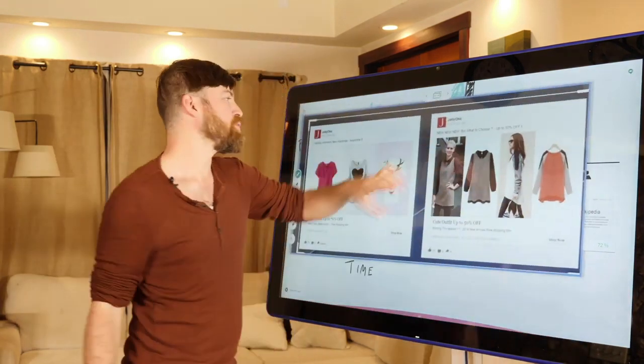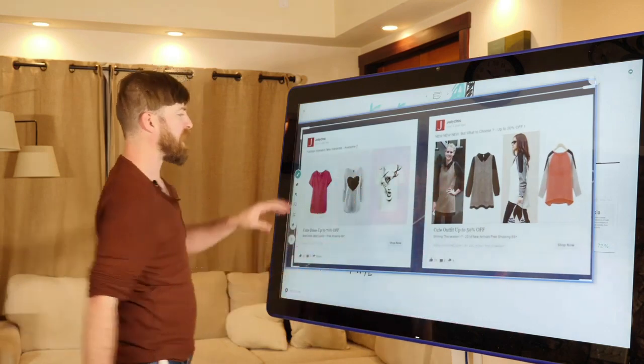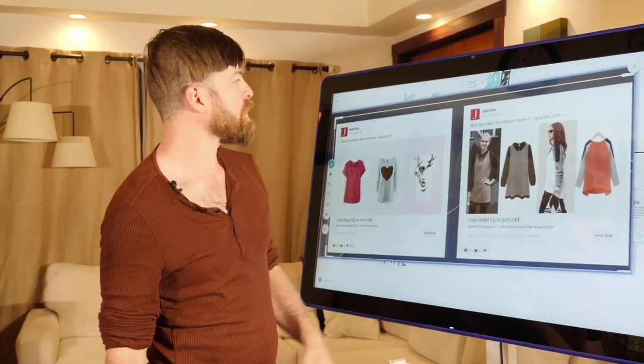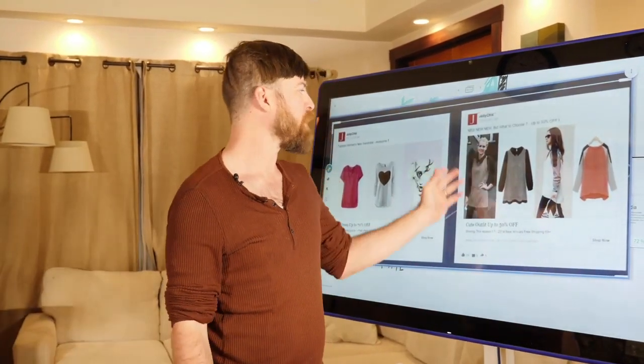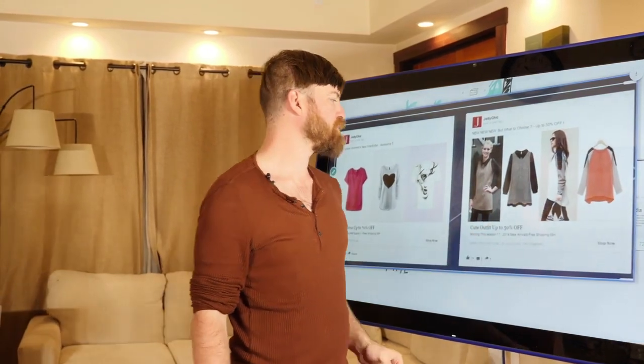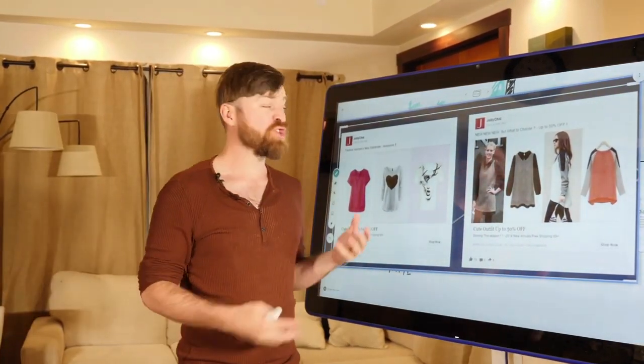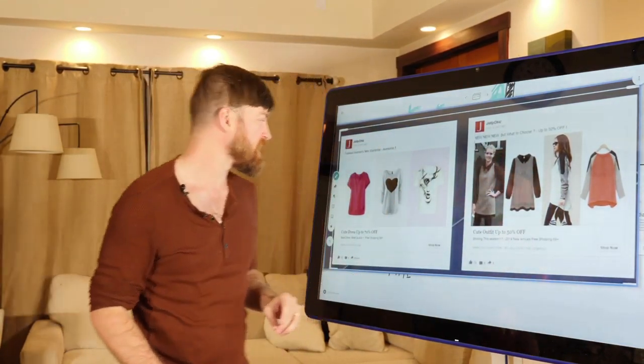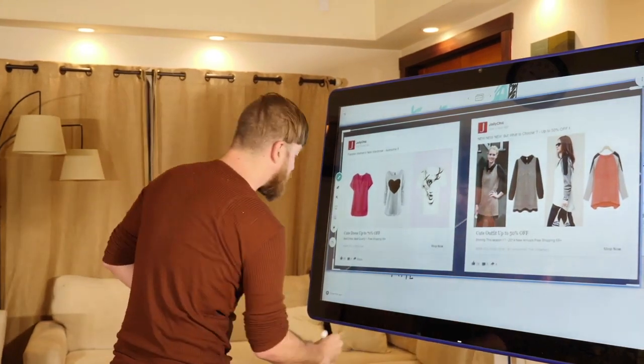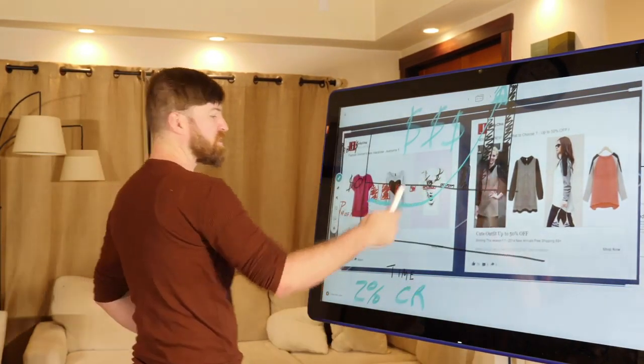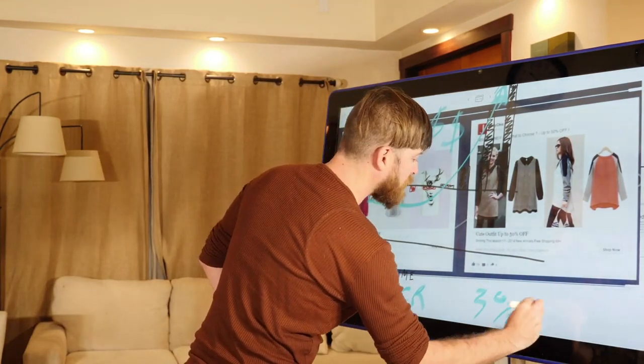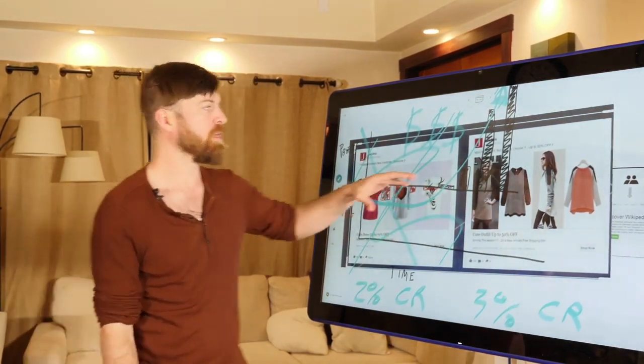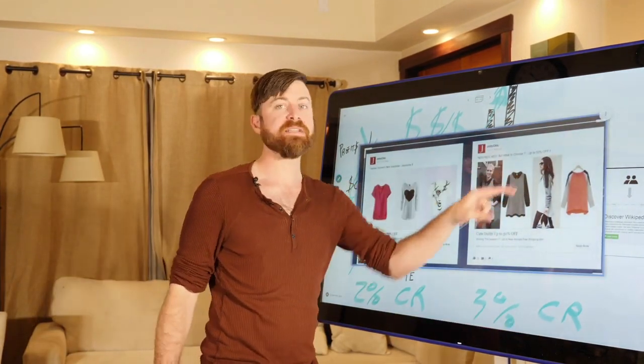Now here's an example of two ads that were on Facebook. So one ad has pictures of dresses without people wearing them and it says cute dress up to 70% off. Here's another ad that actually has individuals wearing their dresses and it says cute outfit up to 50% off. Now a normal company would just run these ads and just say, oh, here are two good ads. But a smart marketer who knows data analysis will look at these ads and they'll say, okay, this ad got a 2% conversion rate whereas maybe this ad got a 3% conversion rate. And a smart marketer would end up getting rid of the ad that didn't work and only work with the ad that did work right here.